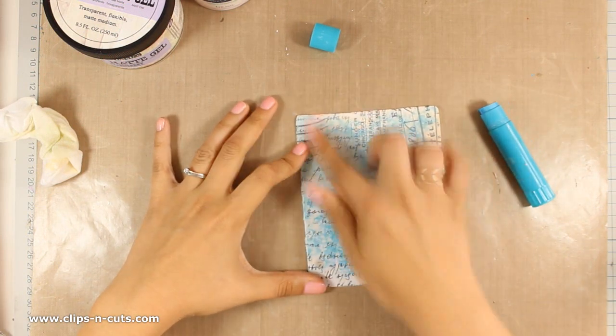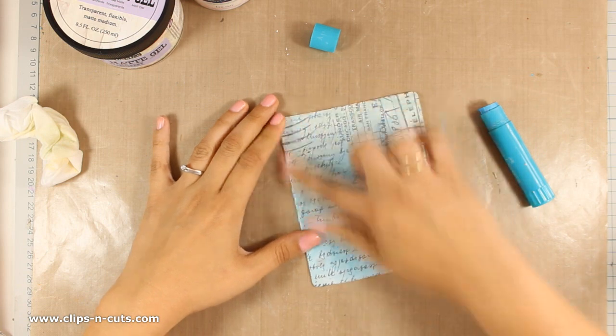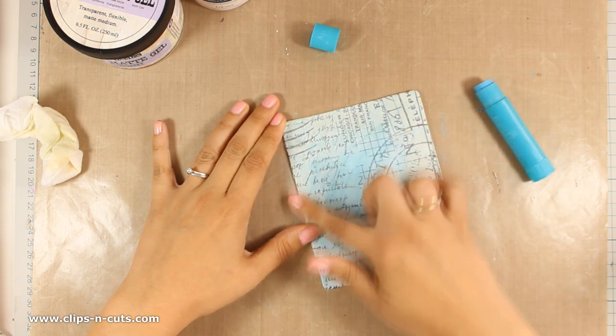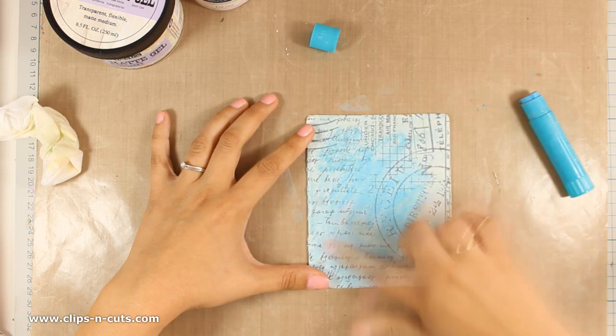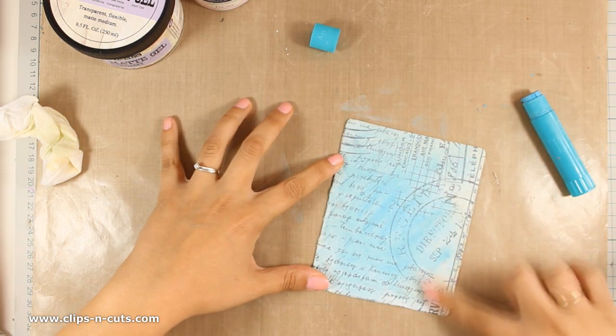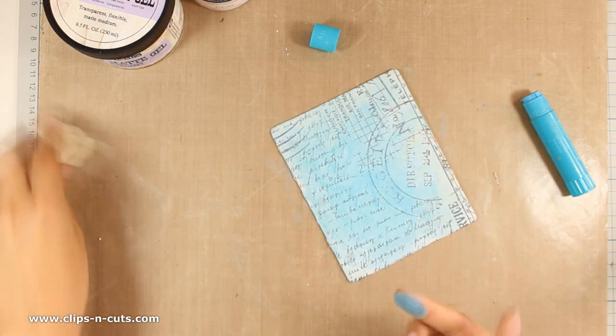To color my page I will be using gelatos, not only for creating my background but also for the focal points and the shadows, and I will show you how I do it. First of all, I am using this blue gelato. I am applying directly on my page and smudging it with my finger.